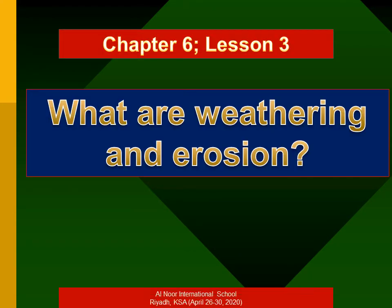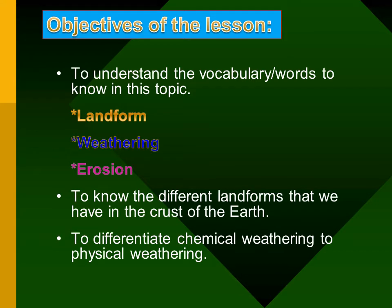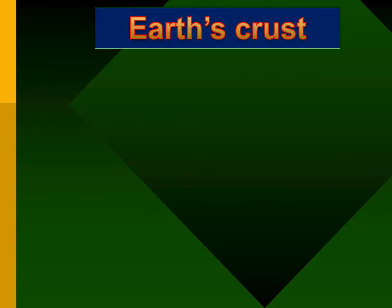Hi all, this week we are reviewing chapter 6, lesson 3: What are weathering and erosion? Our lesson objectives are to know hard vocabulary words like landform, weathering, and erosion, to know the different landforms in the crust of the earth, and to differentiate chemical weathering from physical weathering.